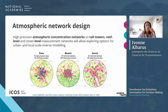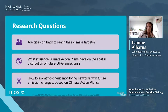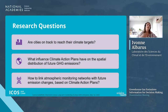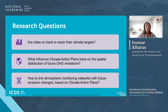We first looked at city self-reported inventories to see if they are on track to reach their climate targets, then examined climate plans to see how they influence the spatial distribution of future emissions, and third, we linked that to atmospheric monitoring networks to see how far they can actually track those long-term emission trends at very fine scales.